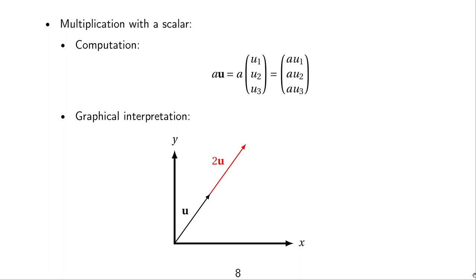Multiplication with a scalar also works component-wise. The scalar a is multiplied with the vector bold u — this works in arbitrary dimensions. a is multiplied by each component u1, u2, u3, and the output is again a vector. Graphically, the vector either gets longer or shorter. For example, 2 times u results in a vector that is twice as long as the original vector u.